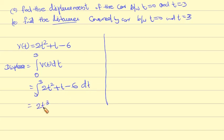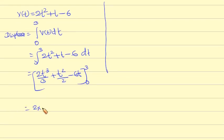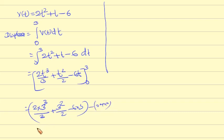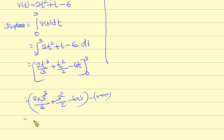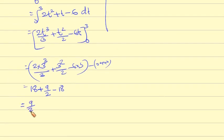That is equal to [2t³/3 + t²/2 - 6t] evaluated from 0 to 3. Substituting the limits: 2(3³)/3 + 3²/2 - 6(3) minus zero, which equals 2(9) + 9/2 - 18. The answer is 9/2 units.